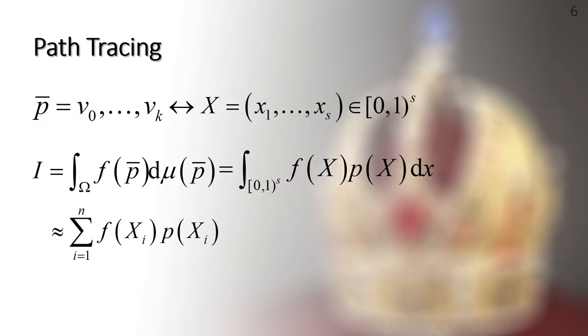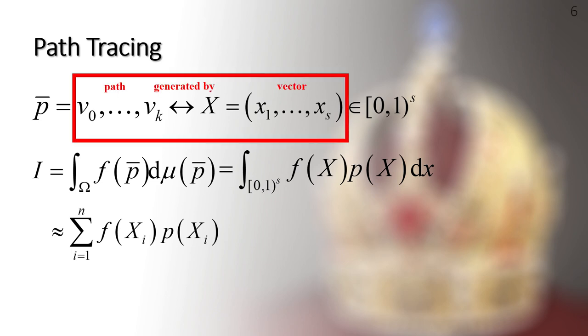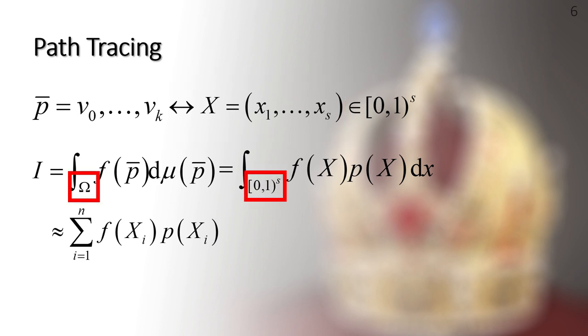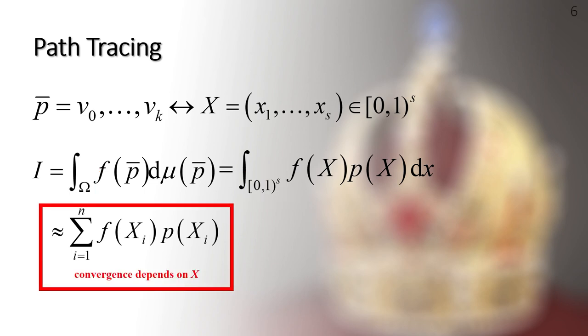Before stepping into the topic of low-discrepancy sequences, let's refresh some facts about path integration. We have just introduced the path integration as an integration of all possible light paths. In the aspect of path tracing, each path is determined by a series of random or quasi-random numbers. We treat the numbers in each path as a high-dimensional sampling vector. Without loss of generality, we define these vectors in an s-dimensional unit hypercube, such that the integrating domain becomes the hypercube. In this way, the path integration connects with general integration.